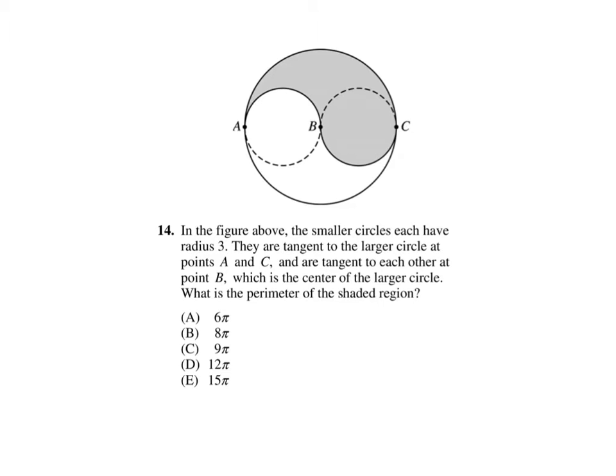First things first, any time you have a word problem, you always skip straight to the end. Because the end has the question, and the question here asks us, what is the perimeter of the shaded region?